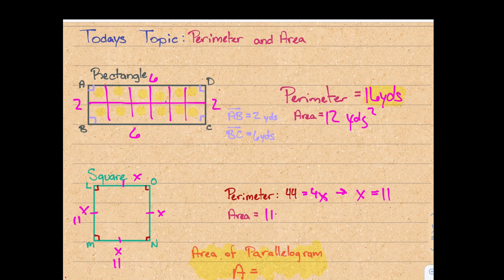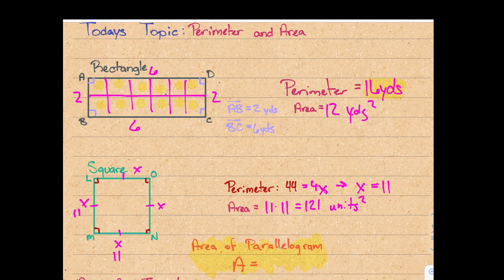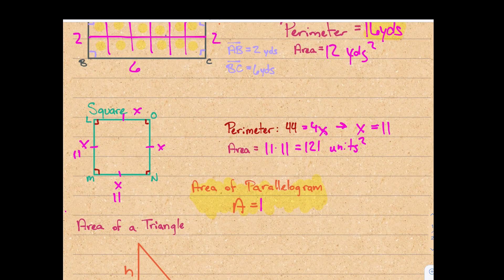We'll do something similar with the square. The square has side lengths that are 11 units and 11 units. So if I want to find the area without drawing all the squares, I'll multiply. 11 times 11 is 121 units squared.